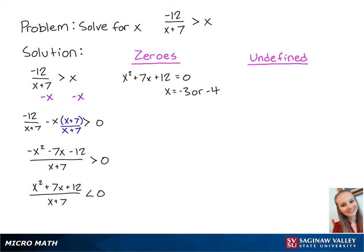We can also find the values of x that make the inequality undefined using the equation x plus 7 equals 0. Solving this equation, we get x equals negative 7.